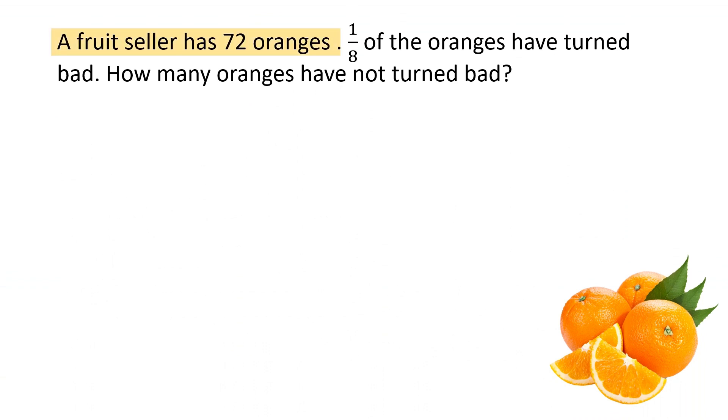A fruit seller has 72 oranges. 1 by 8 of the oranges have turned bad. How many oranges have not turned bad? So, initially a fruit seller has 72 oranges. And out of these 72 oranges, 1 by 8 have turned bad. So, let's find out what is 1 by 8 of 72. Let's see if we can simplify. 8 ones are 8. 8 nines are 72. So, 9 oranges have turned bad.